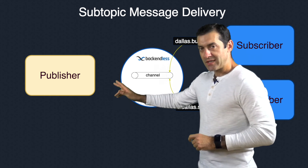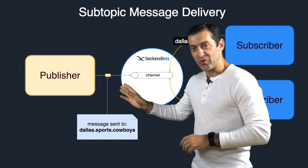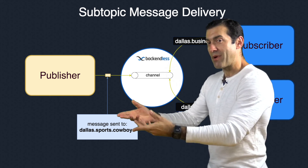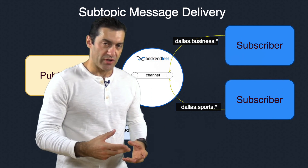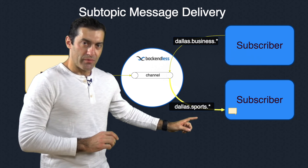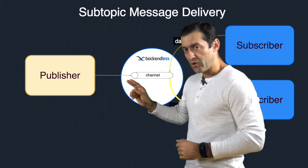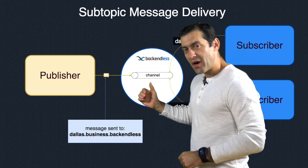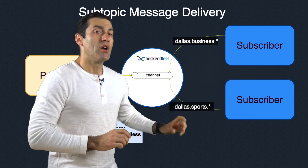The publisher sends a message to a subtopic called Dallas.Sports.Cowboys — some news or information related to Dallas Cowboys. In this case, the subscriber that expressed interest in Dallas.Sports.Star will receive that message. Then, another publisher sends a message to subtopic Dallas.Business.Backendless. Since Backendless is a Dallas-based company, the subscriber that expressed interest in Dallas.Business.Star will receive that message.